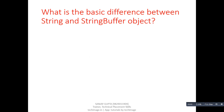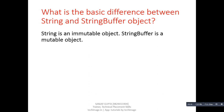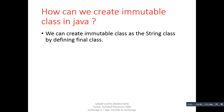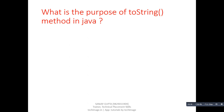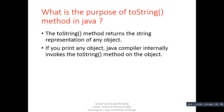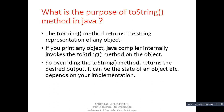Next question: what is the basic difference between String and StringBuffer? Answer: String is an immutable object whereas StringBuffer is a mutable object. Next question: how can we create an immutable class in Java? Answer: We can create an immutable class like the String class by defining a final class. Next question: what is the purpose of the toString() method in Java? Answer: The toString() method returns the string representation of any object. If you print any object, the Java compiler internally invokes the toString() method on the object. Overriding toString() returns the desired output — it can be the state of an object depending on your implementation.